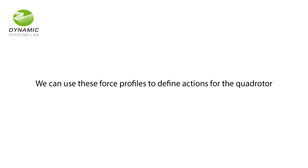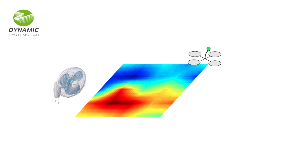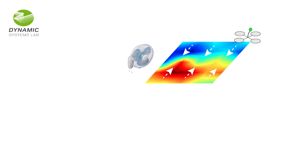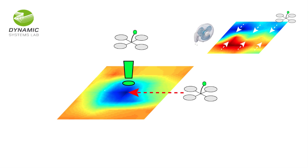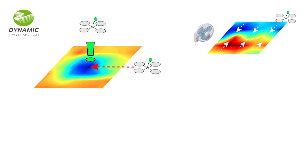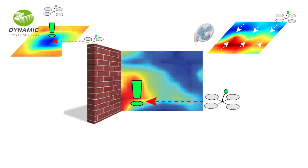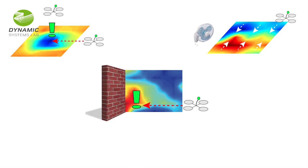We can use these force profiles to define actions for the quadrotor, such as tracking the center of the wind induced by a fan, detecting downwash to avoid catastrophic loss of lift, and detecting the wall to avoid collisions — all by just measuring the external forces and torques on the quadrotor.